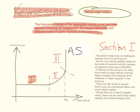Section one. The Keynesian model does not really distinguish between the short run and the long run — this is important. They believe more in different levels of spare capacity. They believe that the aggregate supply curve will be perfectly elastic at low levels of economic activity because of wage-price downward inflexibility. Workers will not accept cuts in their wages, and prices are very sticky downwards.